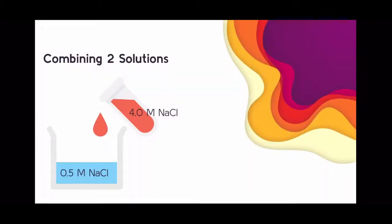Let's say that I have a beaker filled with 50 milliliters of a 0.5 molar sodium chloride solution, and to that I add 25 milliliters of a 4 molar sodium chloride solution. I mix those together and I have a new solution with a new molarity. Common sense tells you it's going to be somewhere between 0.5 molar and 4 molar, but how can we calculate the exact molarity of that new solution?